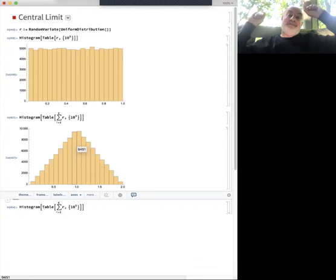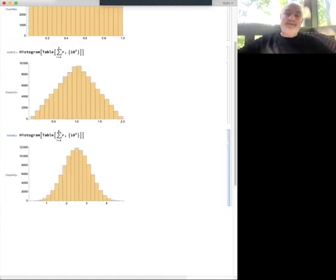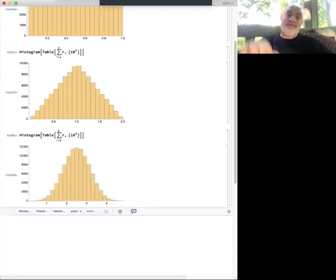And of course we're going to recover the Gaussian here. You add five and look, you almost have a Gaussian.